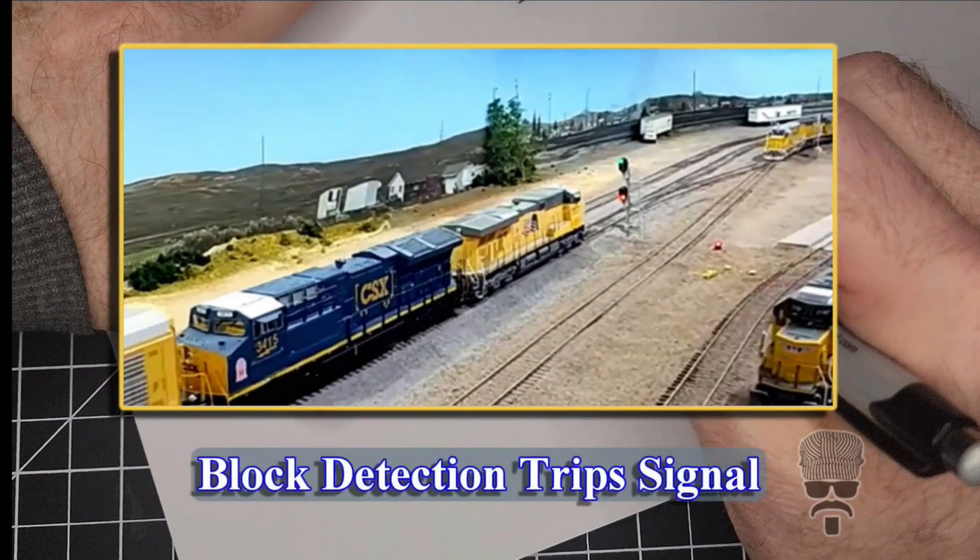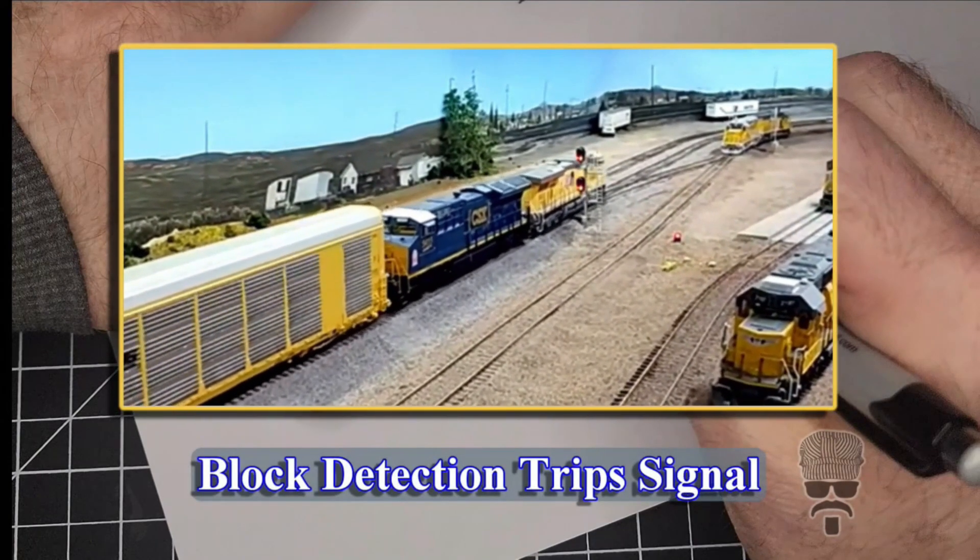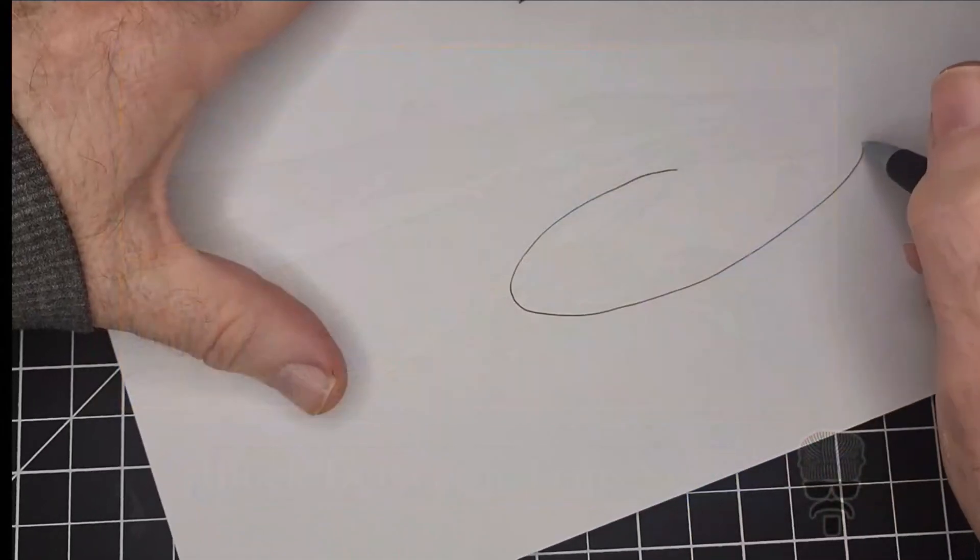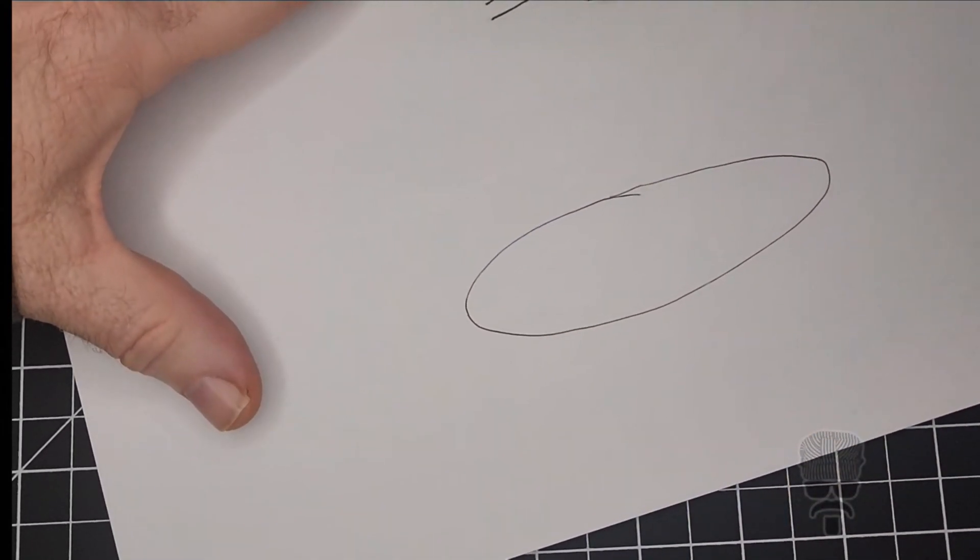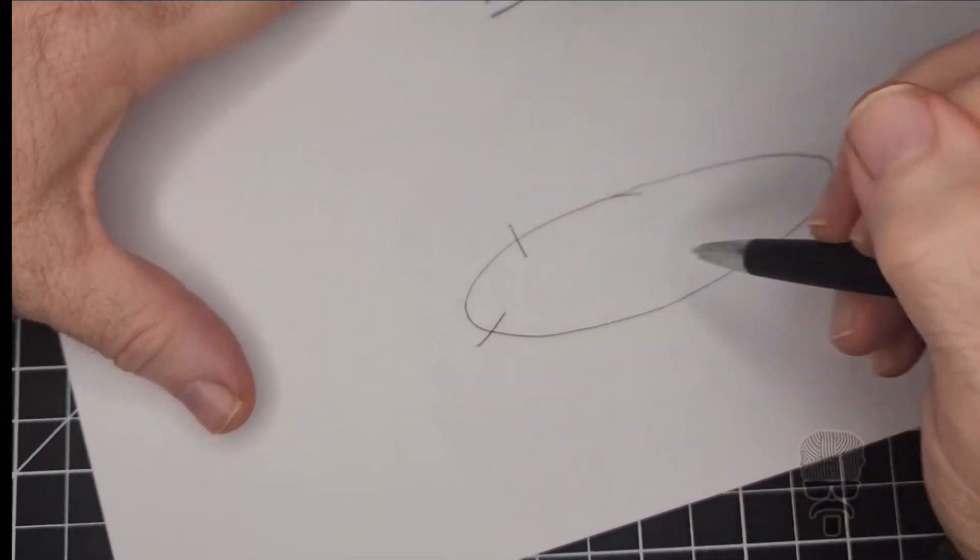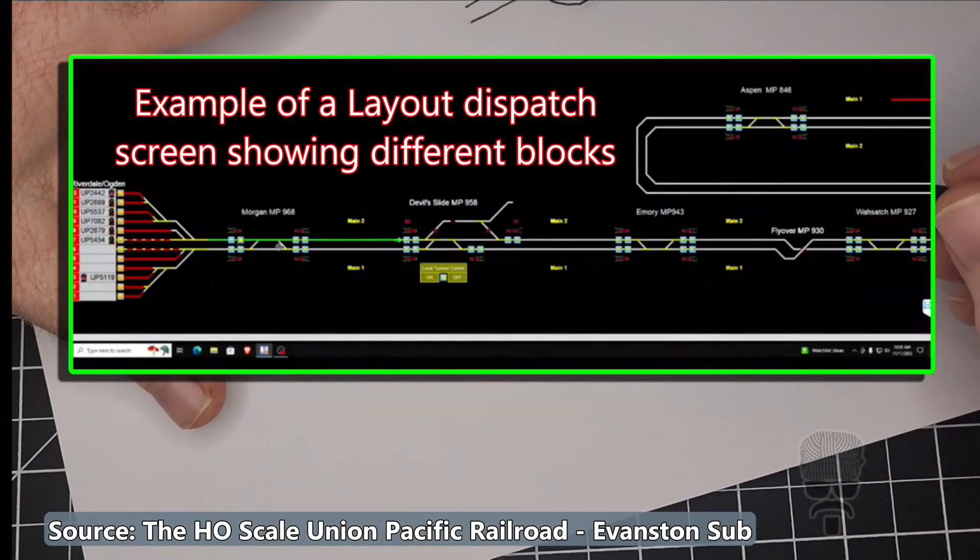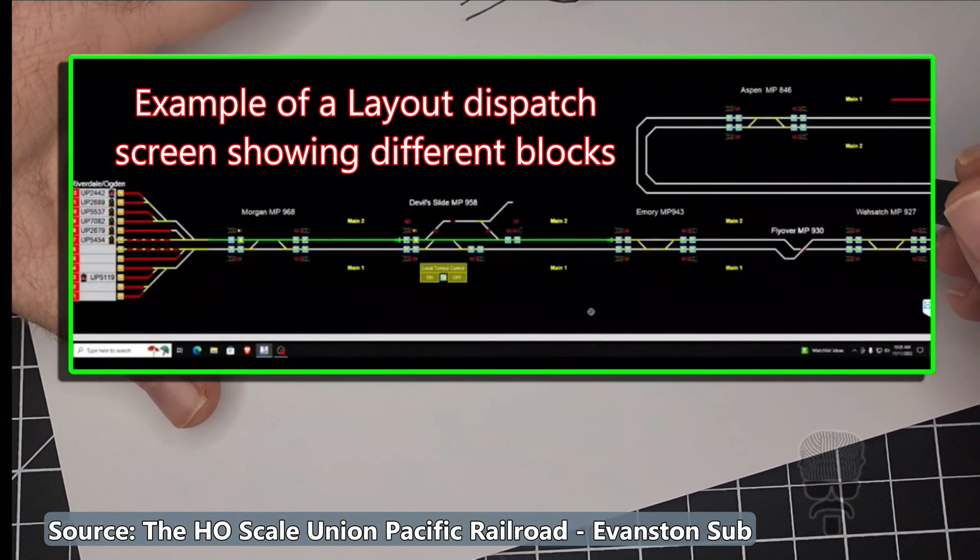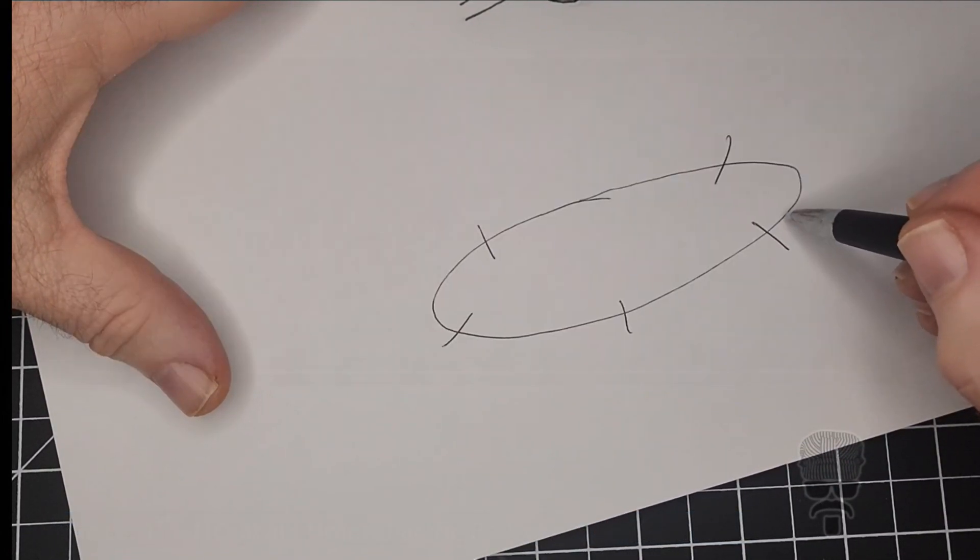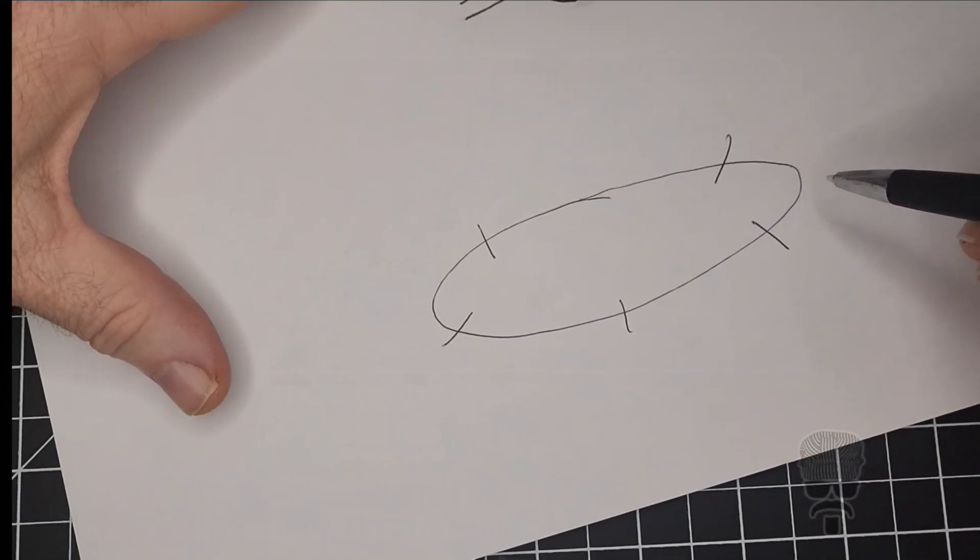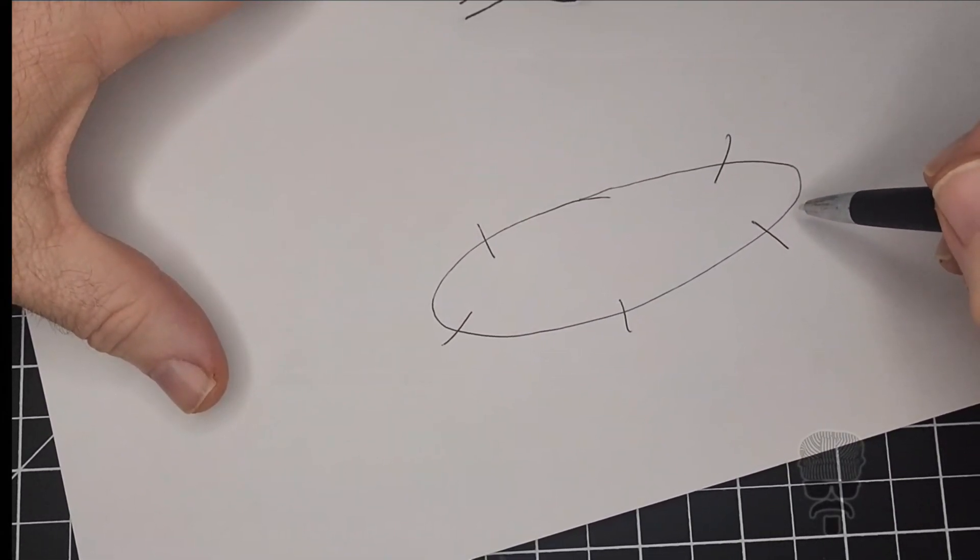Resistor wheelsets are primarily for block detection on DCC layouts. Block detection is a way of tracking the trains on a layout. Many modern layouts are broken into blocks. Each block is electrically isolated from the other blocks. One way to track locomotives and rolling stock is to use block detection devices that detect any power draw in that block. The locomotives draw power, but what happens when the lead engines clear a block and there are still 40 cars in the previous block?